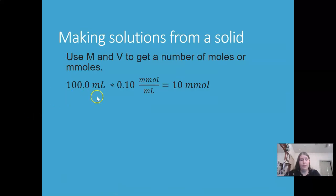If I want 100 milliliters of 0.1 molar solution, that's 0.1 millimoles per milliliter. My milliliters will cancel, and I know I need 10 millimoles of the copper 2 chloride dihydrate, which would be great if I had something that measured in millimoles, but I don't. So I need to get this into grams or milligrams.